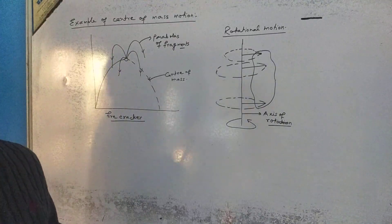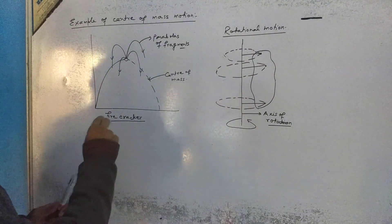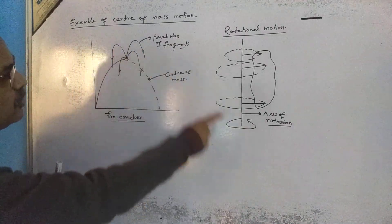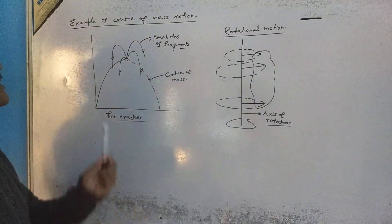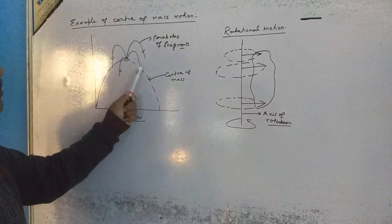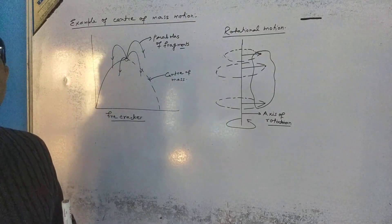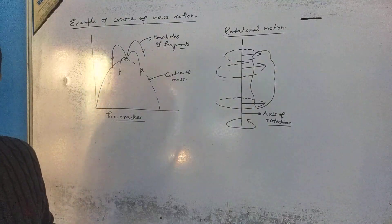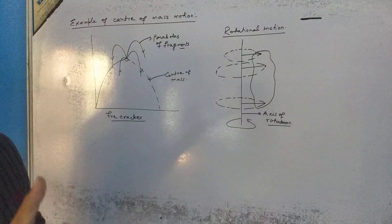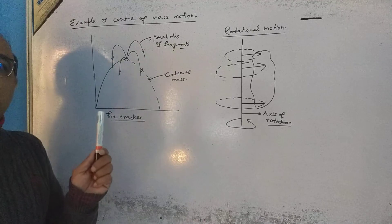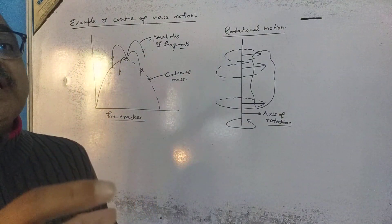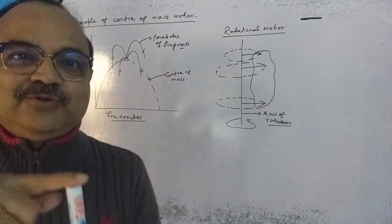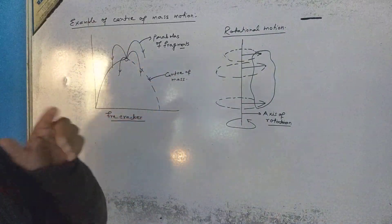The original parabolic path is the one that would have been followed by the original firecracker. That means if it were thrown from here in the unignited state, it should have followed some original path. The center of mass still follows that same parabolic path, because the explosion has not taken place due to an external force — it happened due to internal forces. So conservation is followed.